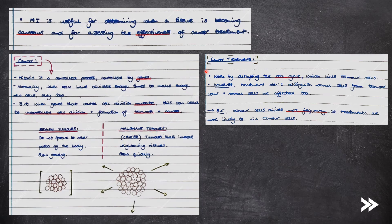So, let's have a look at cancer treatment. Cancer treatments work by disrupting the cell cycle which kills tumour cells. However, treatments do not distinguish normal cells from tumour cells, which means that normal cells are affected and killed too. However, tumour cells divide much more frequently, so treatments are more likely to kill tumour cells.